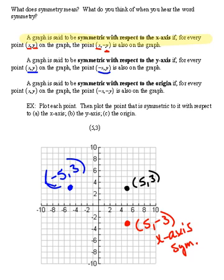Then our final definition says a graph is said to be symmetric with respect to the origin if for every point (x,y) on the graph, the point (-x,-y) is also on the graph. So for this one, we're changing the sign of both the x and the y.